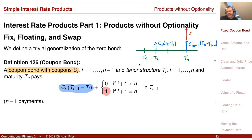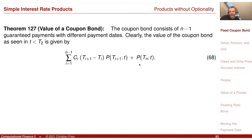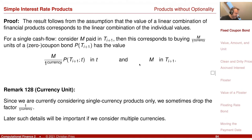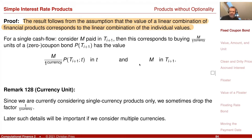So I can immediately write down the valuation. The value of the coupon bond is just the linear combination of the individual zero-coupon bond values. The proof is trivial — the result follows from the assumption that the value of a linear combination of financial products corresponds to the linear combination of the individual values. If you use the universal pricing theorem, you see that the expectation operator is a linear operator and you can use this.